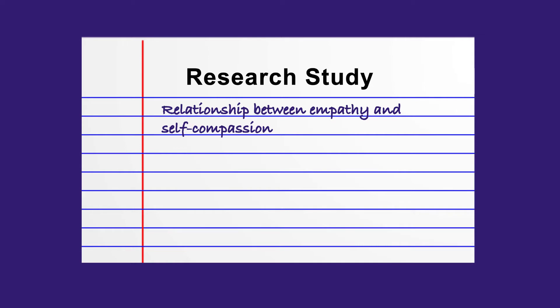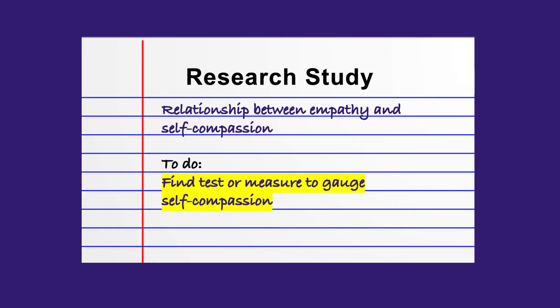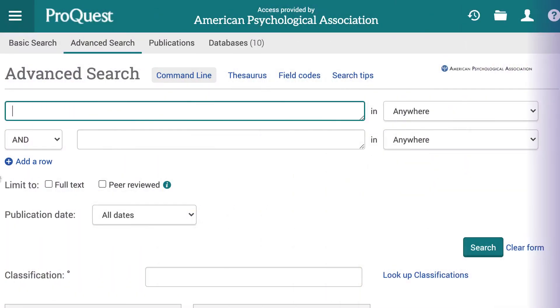Let's say that we're about to begin a research study looking at the relationship between empathy and self-compassion. For this study, we want to use a test or measure to gauge self-compassion in our participants and are hoping that we can find one that already exists in APA.